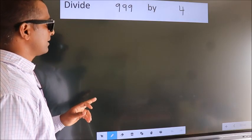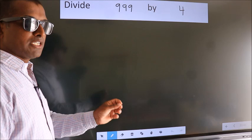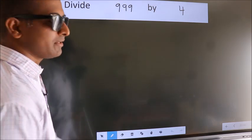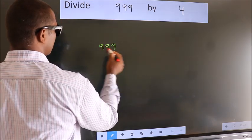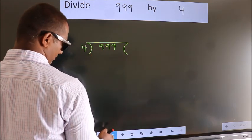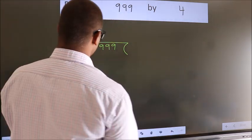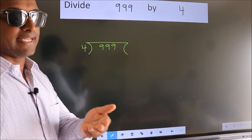Divide 999 by 4. To do this division, we should frame it in this way. 999 here, 4 here. This is your step 1.